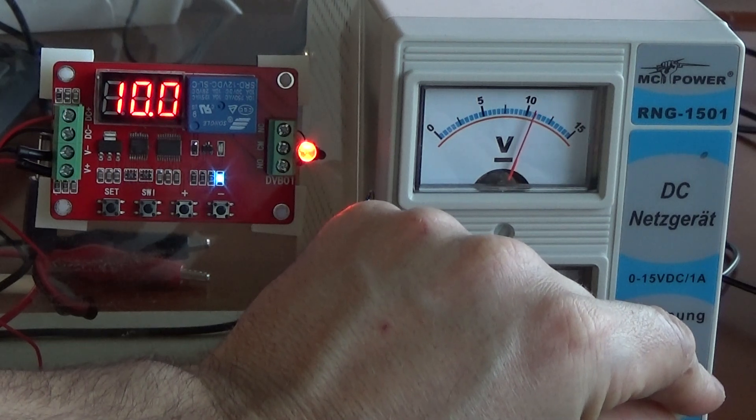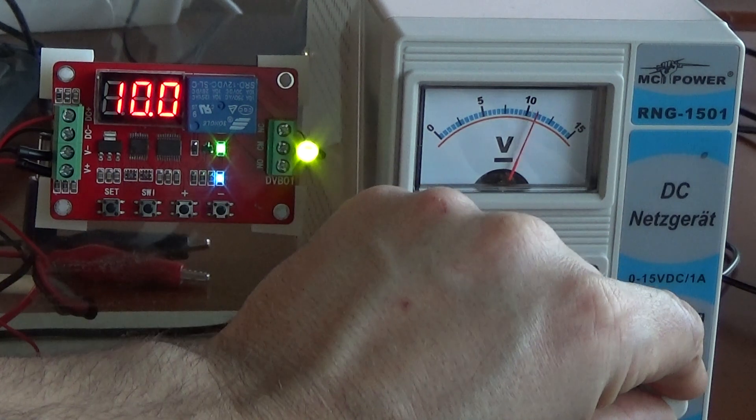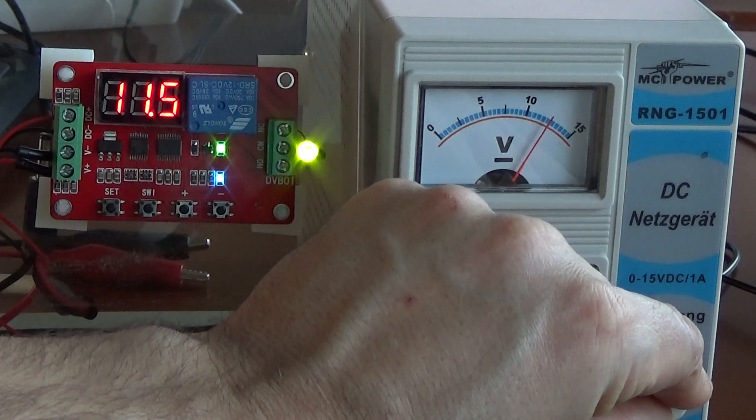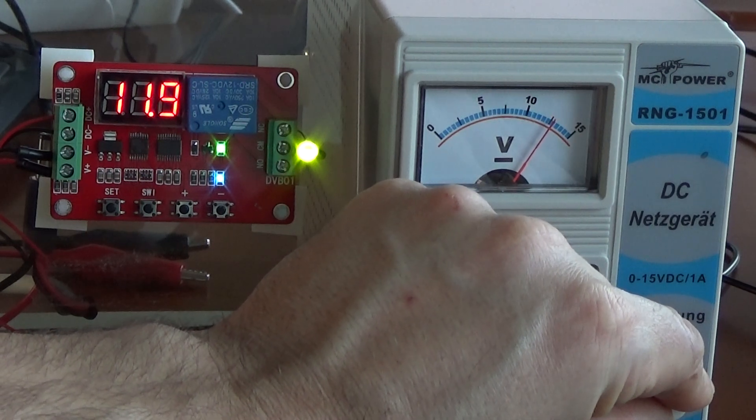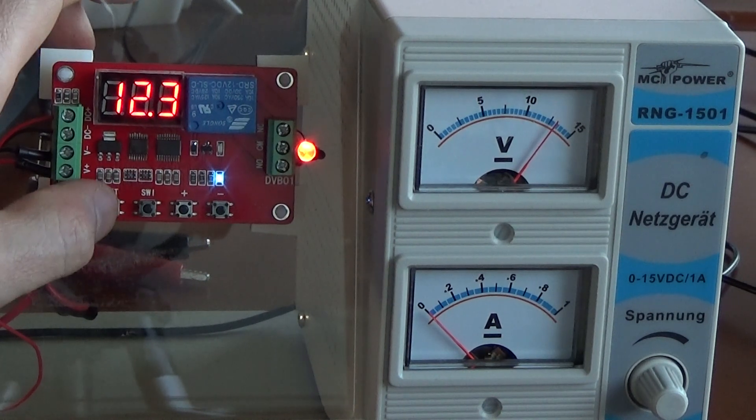Let's try and see if it works. Exactly. So I can now adjust it past 10 volts and only at 12 volts, the relay will deactivate. That was function number two.